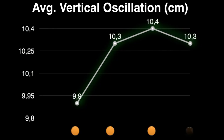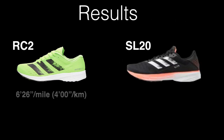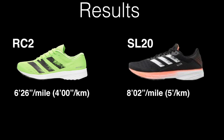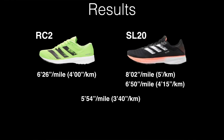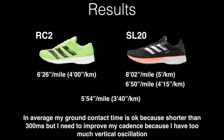Here we have again the Garmin zones, and luckily even though the pace was faster than in previous tests, I was still in the orange zone. So what is the overall result of this quick comparison? It seems that for my running style, the RC2 fits a bit better at 6 minutes 20 seconds per mile (4 minutes per kilometer), while the SL20 fits better at 8 minutes 2 seconds per mile (5 min/km) or 6 minutes 50 seconds per mile (4 min 50 sec/km). Both shoes are essentially equivalent at 5 minutes 54 seconds per mile (3 minutes 40 seconds per kilometer). As a second finding, my average ground contact time is okay — shorter than 300 milliseconds — but I still need to improve my cadence because I have too much vertical oscillation, especially when I increase pace, which means I'm not as efficient as I could be.